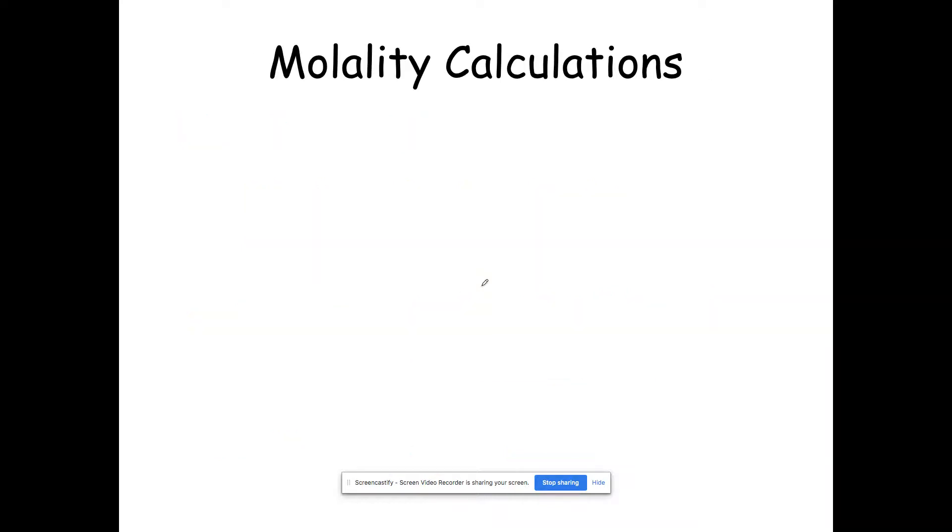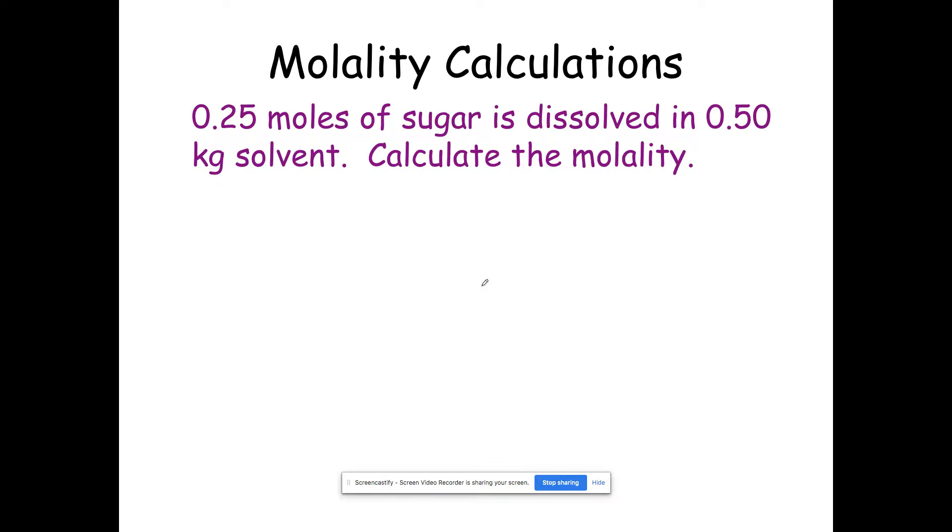To do a calculation for molality, which by the way is not on the Regents but it's useful for some of the other stuff we're going to talk about: 0.25 moles of sugar is dissolved in 0.50 kilogram solvent. Super simple. Molality equals moles of solute over kilograms of solvent.